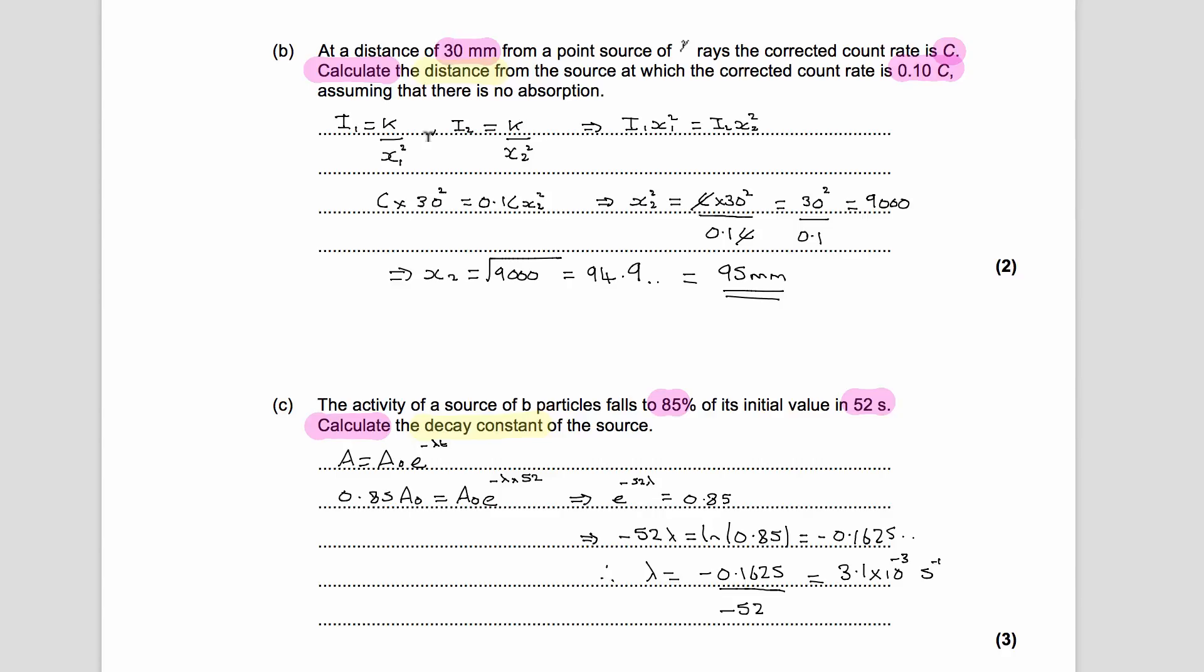So to look at the inverse square law, we use this equation here. What this tells us is that the intensity or the count rate at one place is equal to some constant divided by the distance squared. We can write exactly the same equation down for a new count rate and a new intensity. Imagine that this is at the first place where the count rate is C and the distance is 30 millimeters. When we move away from the source, the new count rate will be equal to the same constant divided by the new distance squared.